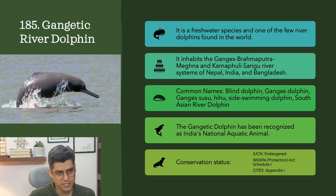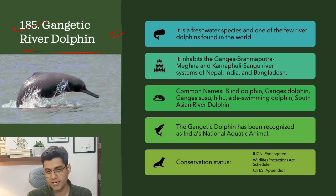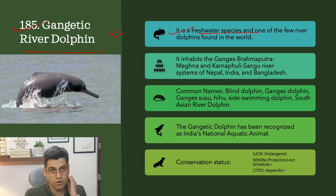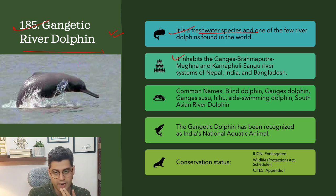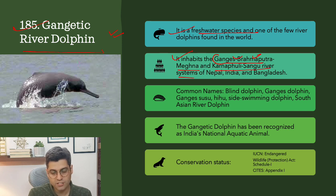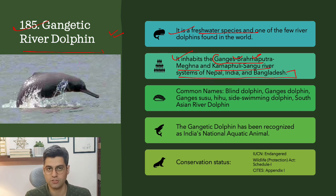The next topic is the Gangetic River Dolphin. It is a freshwater species and one of few river dolphins found in the world. It inhabits the Ganges, Brahmaputra, Meghna, and Karnafuli-Sangu river systems of Nepal, India and Bangladesh.